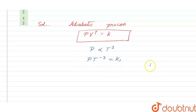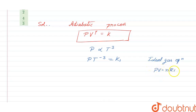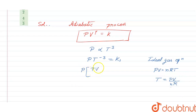Now if we want to replace the temperature term T using the ideal gas equation — PV = nRT — we can express T as PV/nR. Substituting this into our expression, we get P · (PV/nR)⁻³ = k1.